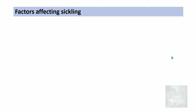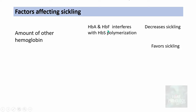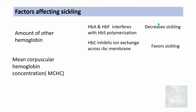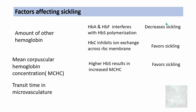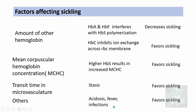The factors affecting sickling depend upon the amount of other hemoglobin present. Hemoglobin A and hemoglobin F interfere with HbS polymerization and decrease sickling, whereas hemoglobin C inhibits ion exchange across the membrane and favors sickling. If the patient has hemoglobin F, they are less prone to sickling episodes. Mean corpuscular hemoglobin concentration also matters — higher MCHC increases chances of sickling. Transit time in the microvasculature is important too, as stasis favors sickling. Other factors such as acidosis, fever, and infections also favor sickling. Only hemoglobin A and hemoglobin F decrease sickling.